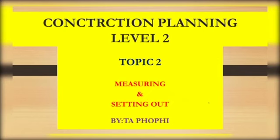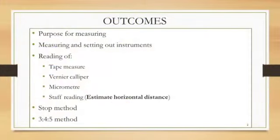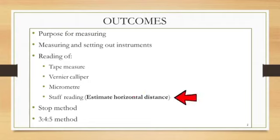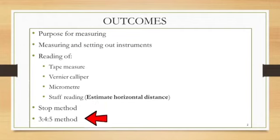The outcomes to be covered are as follows: we are going to look at the purpose of measuring, the measuring and setting out instruments, and check the readings of the following instruments — the tape measure, the vernier caliper, the micrometer, and the staff reading. We will also cover the stop method and the 3-4-5 method.